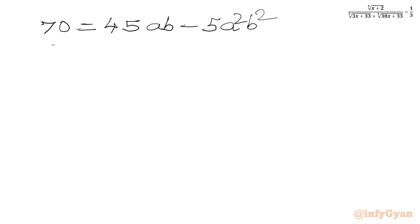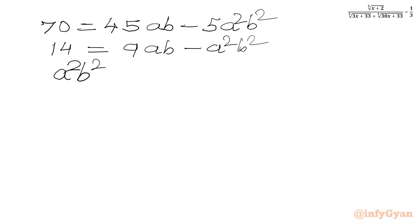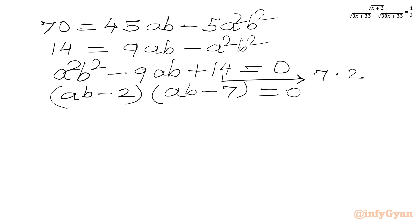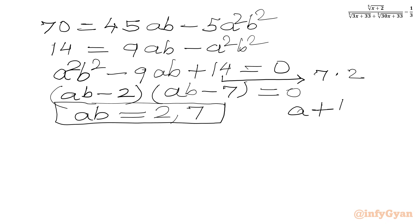Dividing the equation by 5 gives 14 equal to 9ab minus a²b². Taking all terms to the LHS gives the quadratic in ab: a²b² minus 9ab plus 14 equal to 0. The factors of 14 are 7 times 2, and 7 plus 2 equals 9, matching the middle coefficient. So we factor as (ab minus 2)(ab minus 7) equal to 0, giving ab equal to 2 or ab equal to 7.